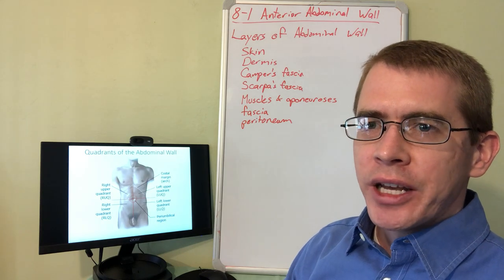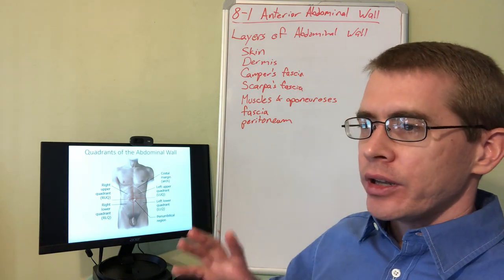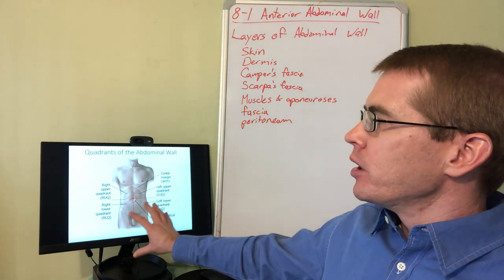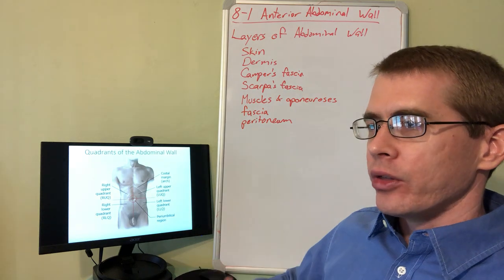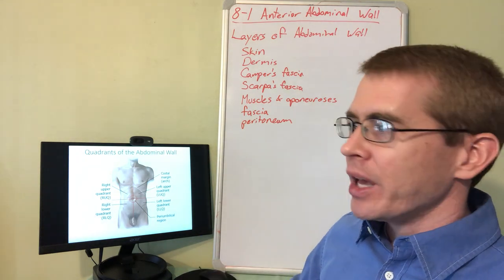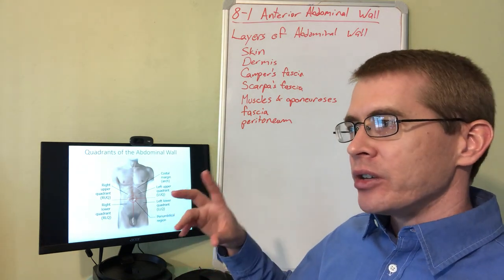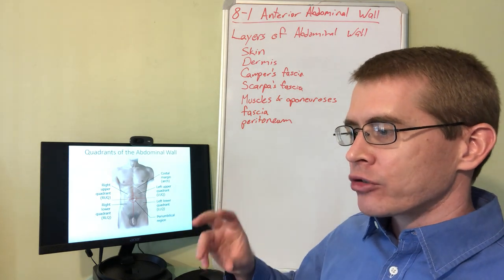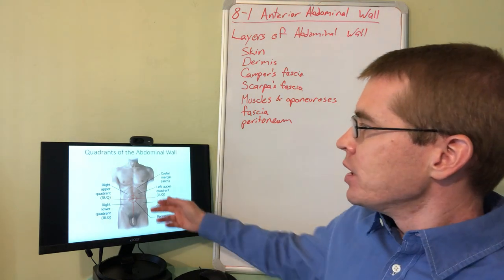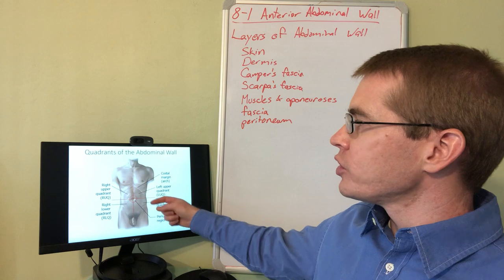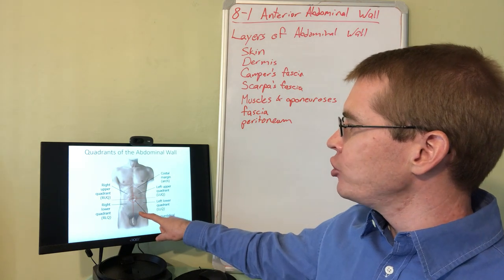All right everyone, this is part two of the 8-1 lecture. Now we're going to look at the actual adult structures of the anterior abdominal wall. Here are the clinical quadrants that help you identify things like abdominal pain within a patient. Once we get to discussing referred pain and things like that, that'll help us understand the different intra-abdominal conditions that can occur. Right now, just understand that the abdominal wall is the portion inferior to the costal margin and to the pelvic brim.